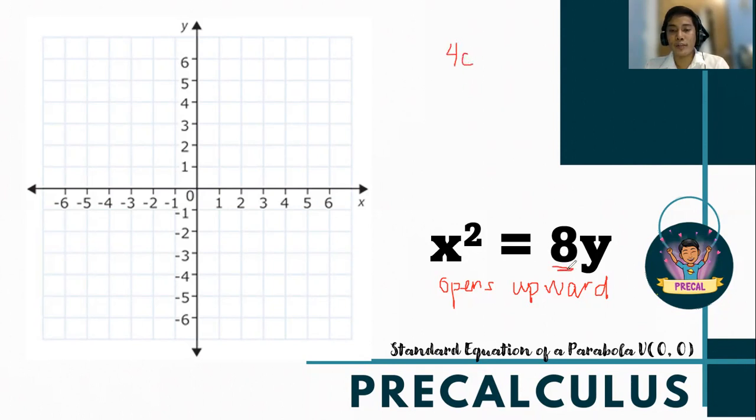Next is to get the value of 4c. We equate using the formula 4c = 8. Dividing both sides by 4, our c distance is now 2. Since this is a structure of a parabola with vertex at (0,0), let us draw first the vertex of the parabola. So that is our vertex now.